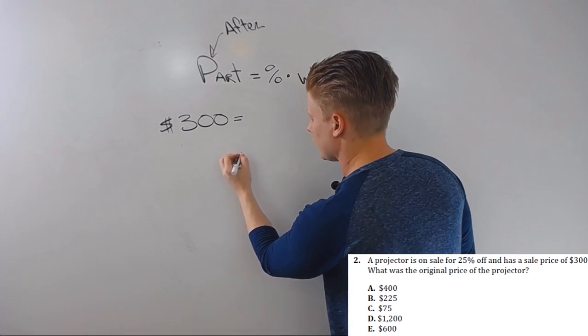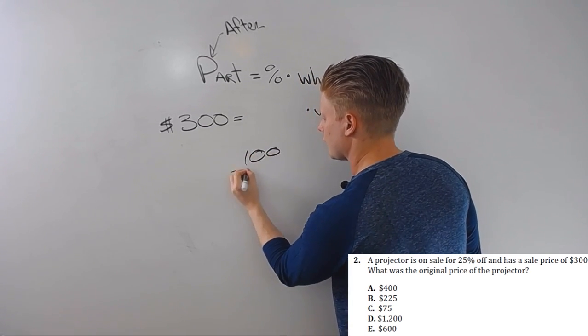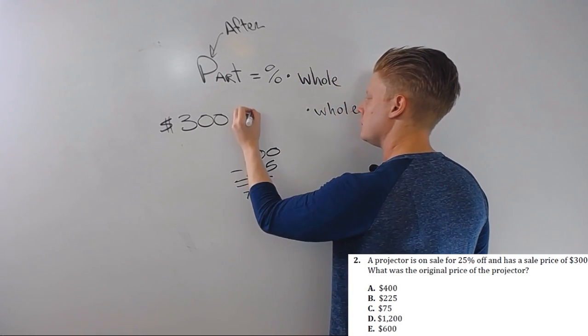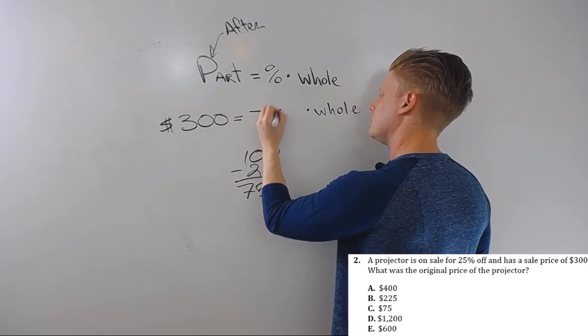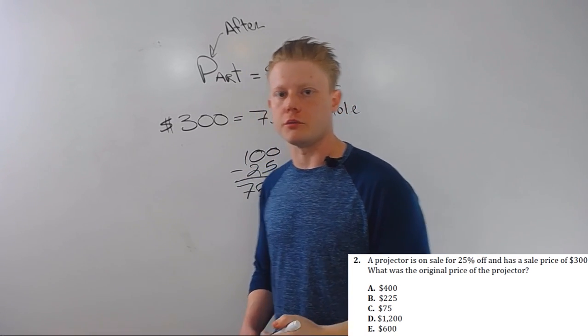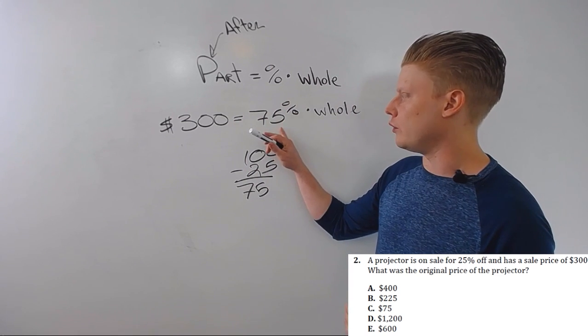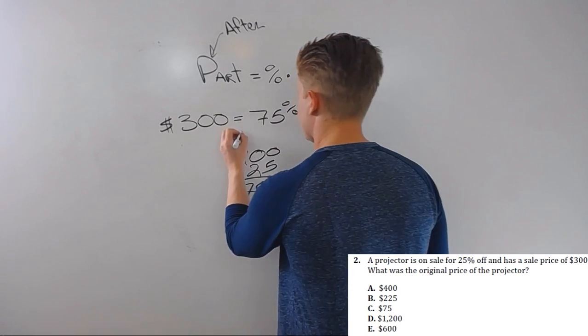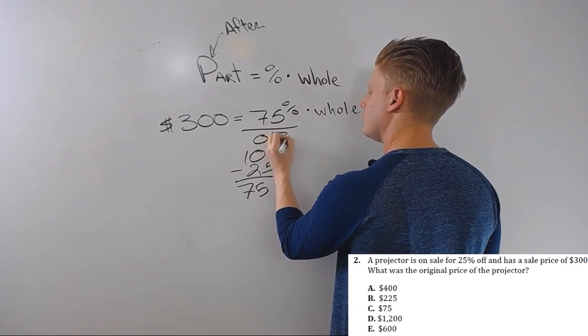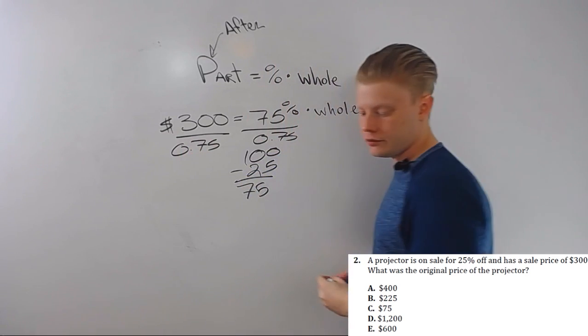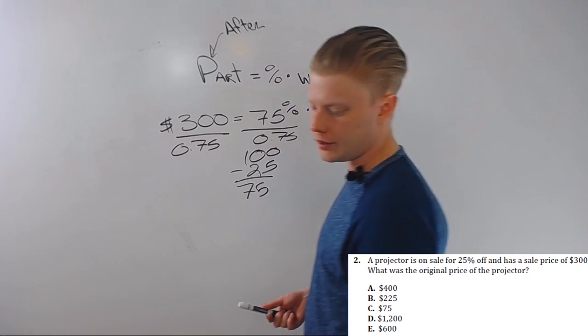We're not paying 25% of the original price of the projector. We're paying 100% minus 25%, we're paying 75%, 75% of the cost of the projector. Now, when we divide 75% or 0.75 into 300, we'll get $400, which is our correct answer.